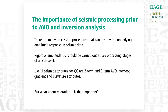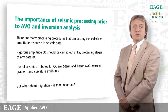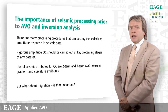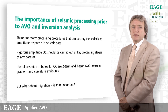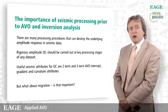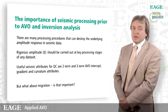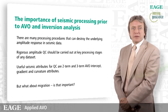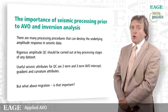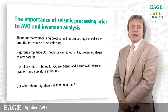Let's think about the data that goes into all this analysis. Is the seismic processing important? Of course it is. There are many processing procedures that can destroy the underlying amplitude response in seismic data that we're after. You have to do rigorous amplitude QC at key processing stages when dealing with any data set. For example, when you've done a Radon demultiple, have you affected the primary reflectivity? One of the ways we test this is using the two-term and three-term AVO intercept, gradient, and curvature attributes — generating those before and after the process to make sure we haven't destroyed or introduced any amplitude artefacts.